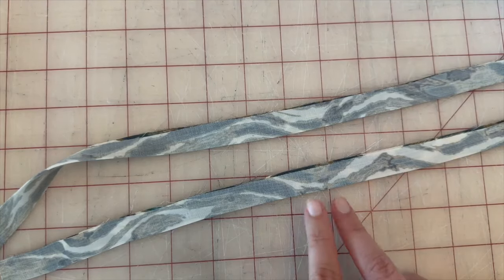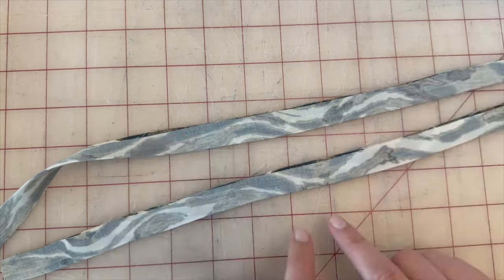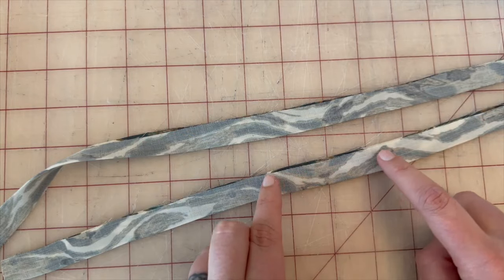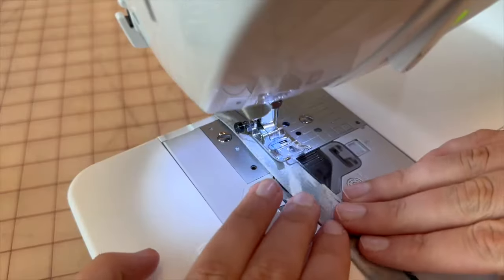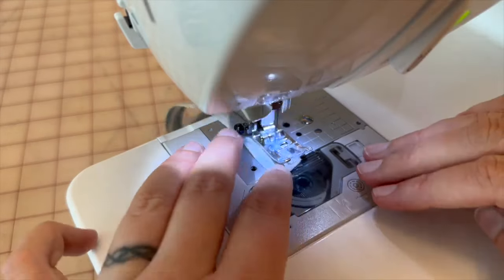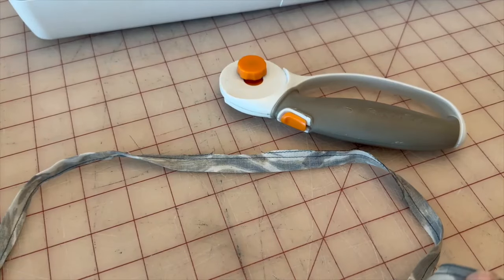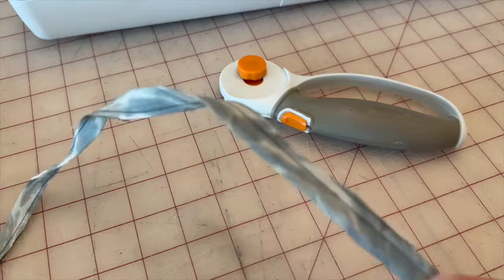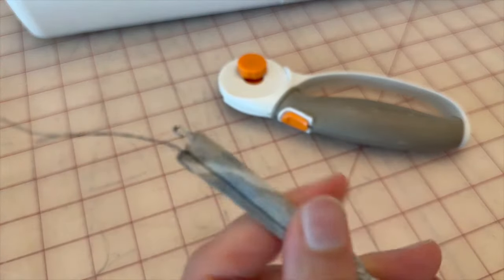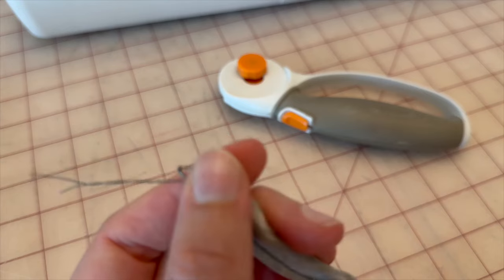Starting with view A, we are going to fold our straps in half and do a quarter inch seam allowance. Next, you'll go ahead and use a spaghetti turner to turn your spaghetti strap inside out.